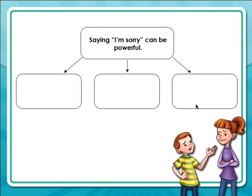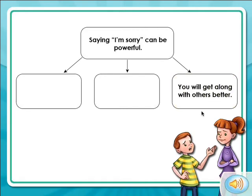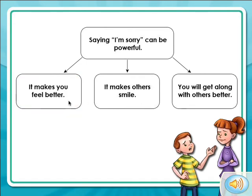You can map out ideas from an article like this. This is called an idea map. The idea at the top is the main idea. The important details are shown below. Click the empty boxes to see the details. You will get along with others better. This map is an easy way to look at the main idea and the important details.